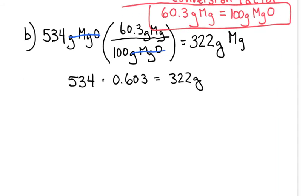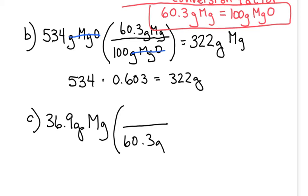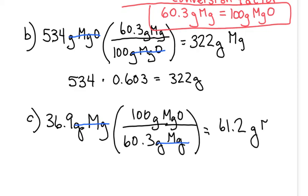So we start on the outside with 36.9 grams of magnesium. And now using the conversion factor, we can see that for every 60.3 grams of magnesium, we can get out 100 grams of the magnesium oxide. Double check, make sure everything cancels as it should. Grams of magnesium on the bottom cancels with grams of magnesium on the top. 36.9 times 100 divided by 60.3 gives you 61.2 grams of magnesium oxide.